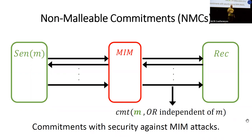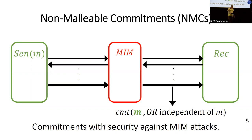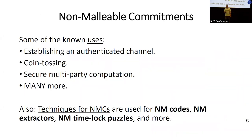Intuitively, and not entirely formally, the message that the receiver gets on the right is going to be one of two extremes: either the man-in-the-middle is transparent — it does nothing and the receiver gets m — or the committed value is completely independent of what happens on the left, such that it can just block all messages of the sender and commit to some fixed value.